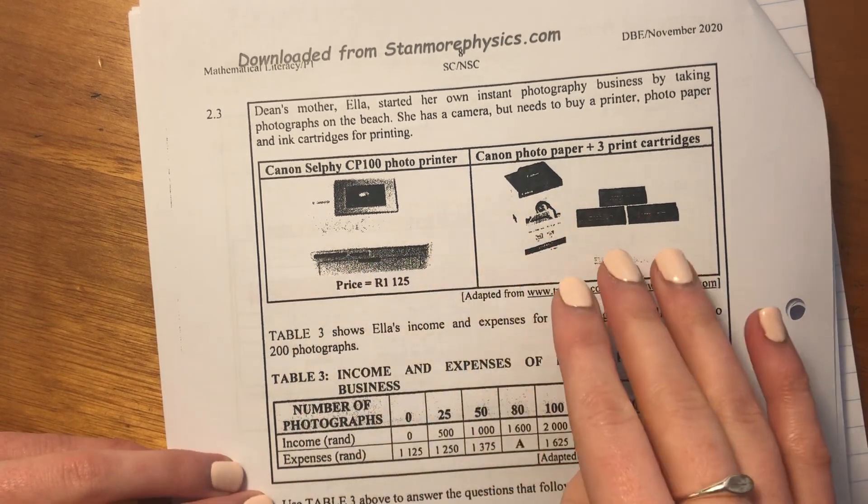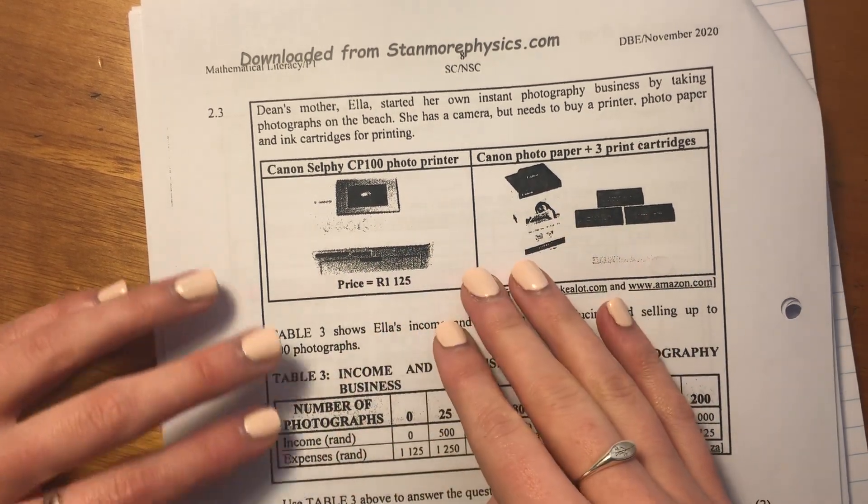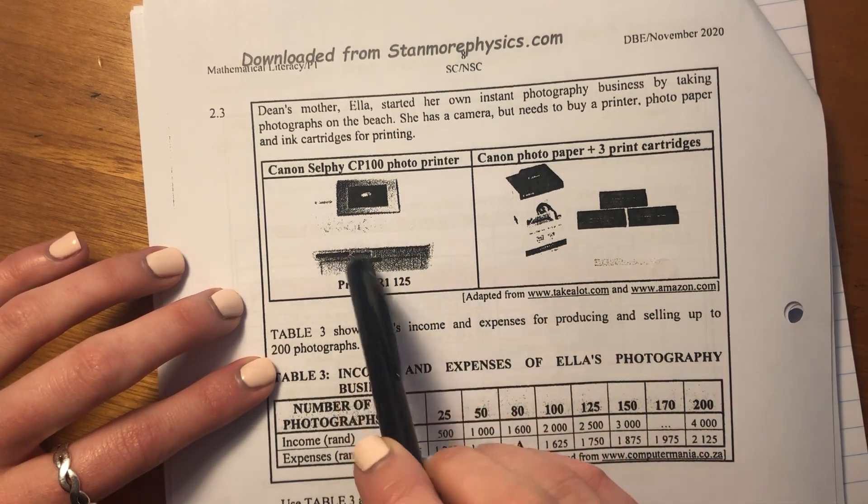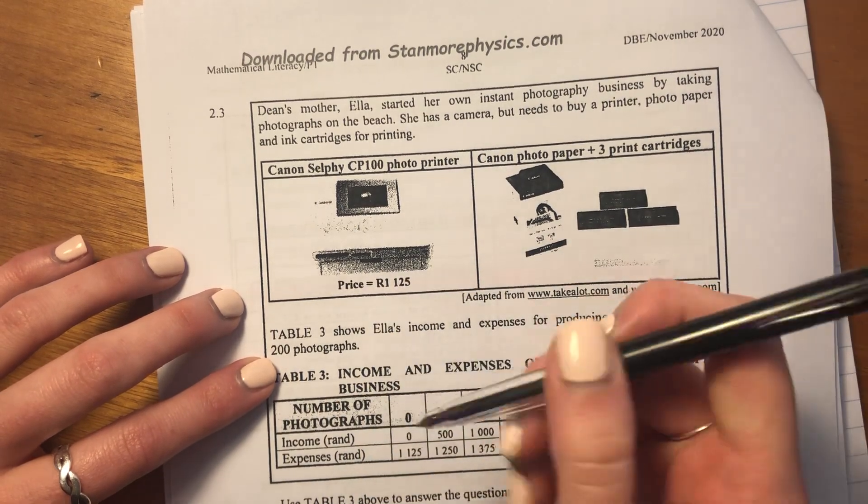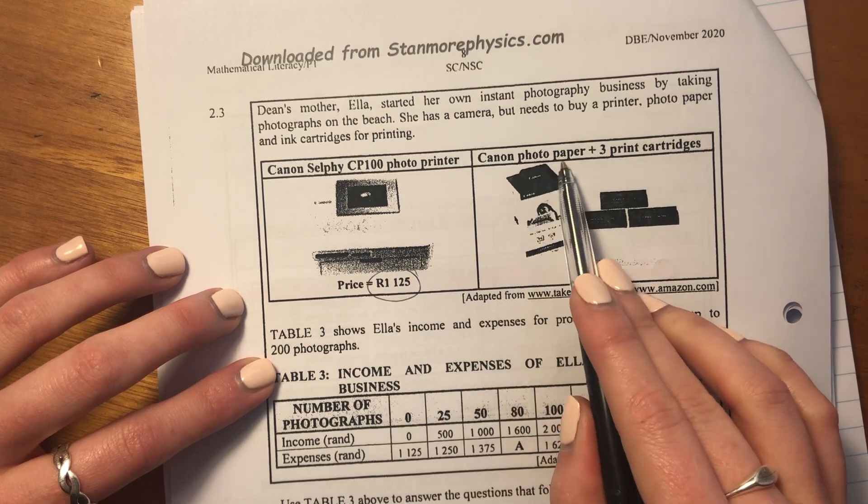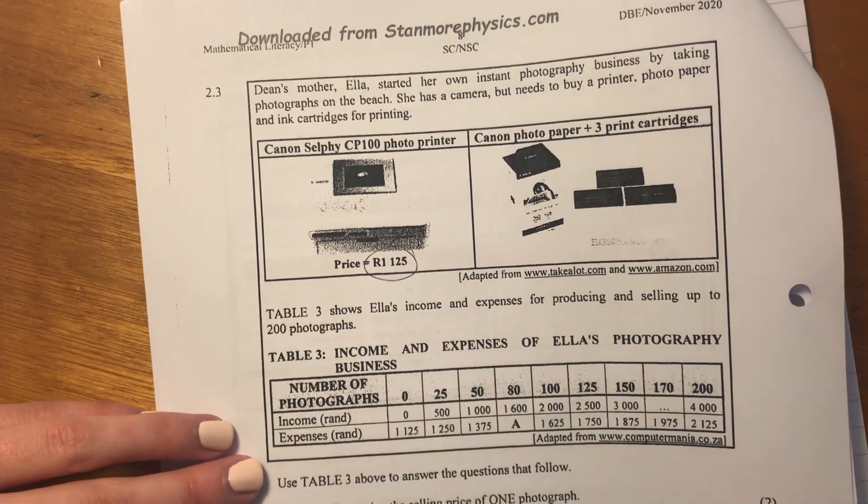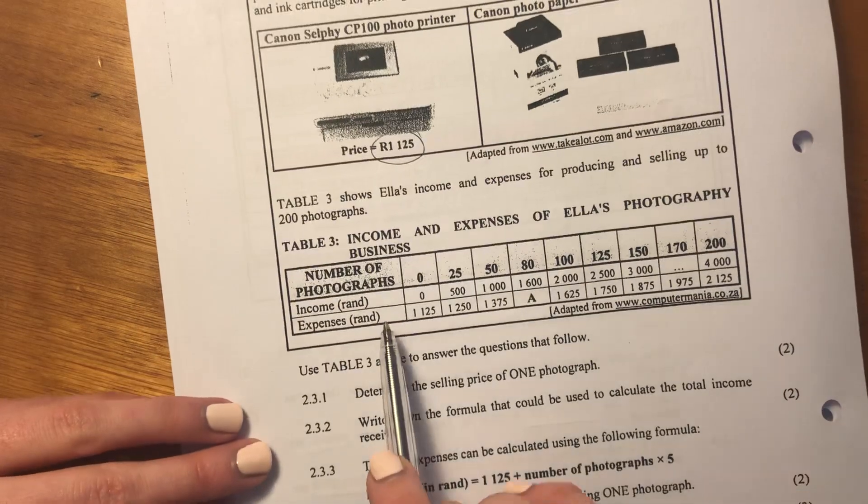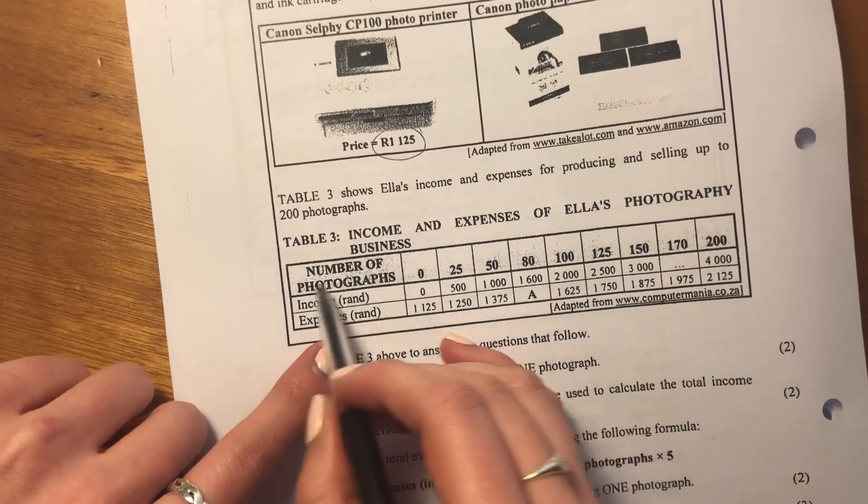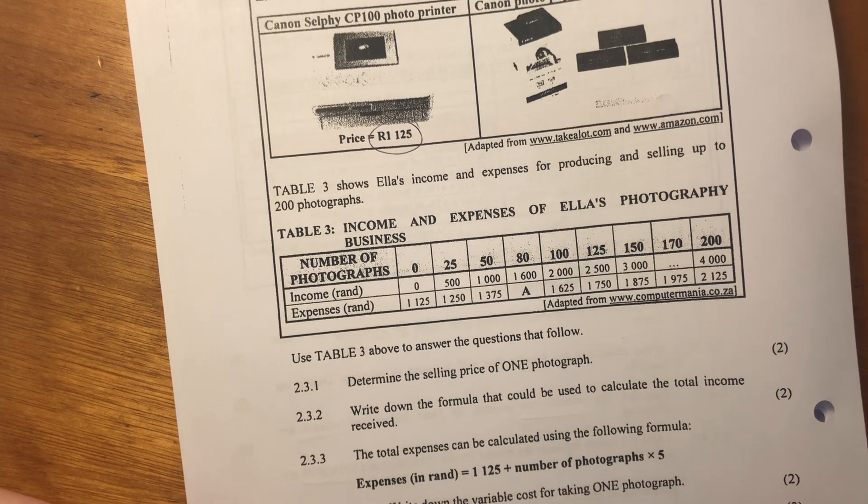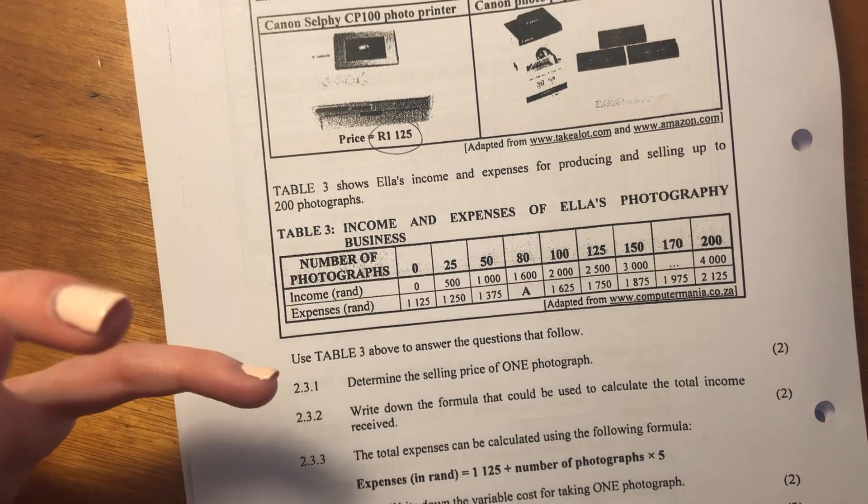Okay, so these visuals are terrible. You'll have better ones in your actual paper. My printer wasn't great. So it's saying this is the photo printer, it's going to cost this much. And then the Canon photo paper plus three print cartridges, it seems to all come together. Then it shows this income and expense table where we have number of photographs, income, and expenses. So this is going to be a break-even income and expense profit question.